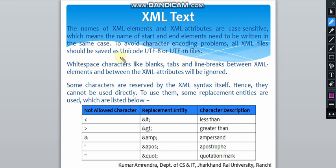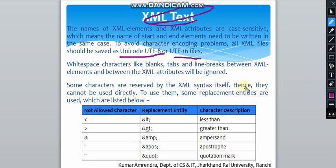To avoid character encoding problems, all XML files should be saved as Unicode — either UTF-8 or UTF-16 files, as these are different coding schemes. White space characters like blank spaces, tabs, and line breaks between XML elements and between XML attributes will be ignored. Some characters are reserved by the XML syntax and cannot be used directly, similar to keywords like 'int', 'float', or 'void' in programming languages.